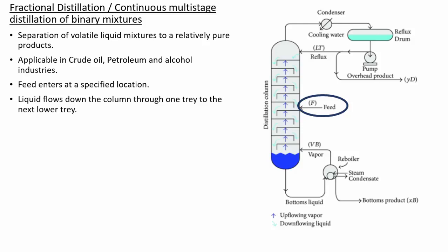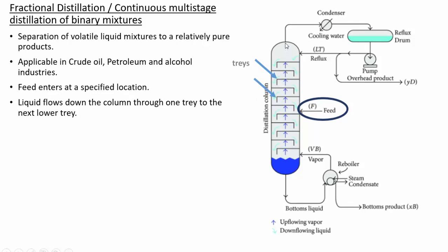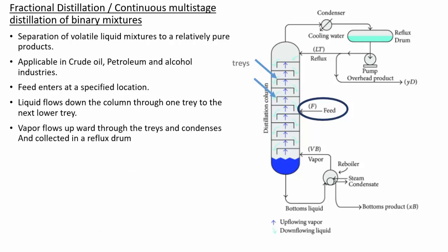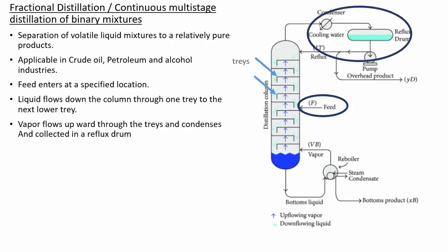The liquid stream flows down the column through the trays and is collected at the bottom. If the feed is already heated, it will evaporate at any point into the trays. At the bottom, the liquid is heated by a reboiler, forming vapor. The vapor passes upward through each tray while liquid falls down. Once the liquid at the bottom is heated, vapor forms and passes through each tray, rising toward the top.